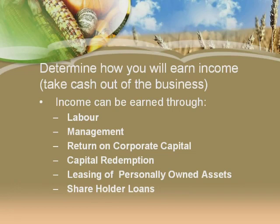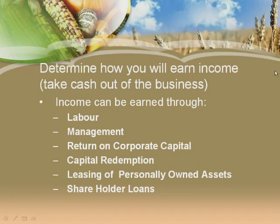The next topic is business structures. This slide is really important in intergenerational farms where more than one generation is farming together. Forget tax for a second — I'd like you to sit down with your son or daughter who's farming with you and look at the ways of how you get money out of a business. This tells you how to get income out of a company, a partnership, or even a sole proprietorship. Understanding these categories really helps explain why the farm is paying you a compensation.